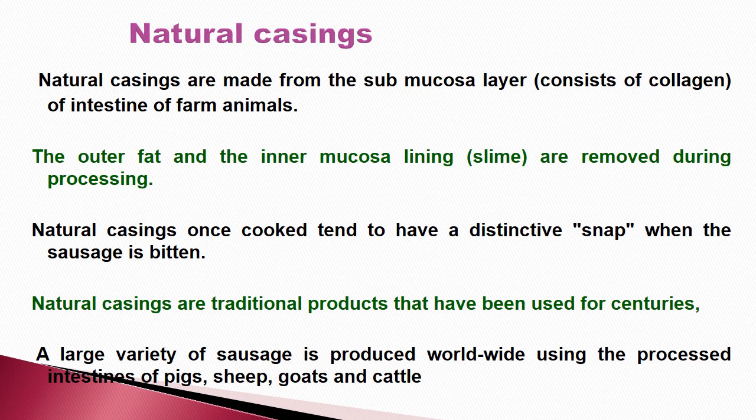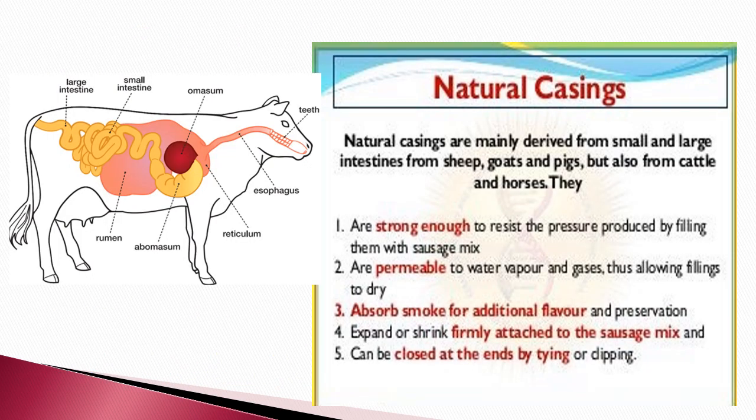Natural casings are traditional products used for centuries. A large variety of sausages are produced worldwide using processed intestines of pigs, sheep, goats, and cattle. In the case of cattle, different parts of the GI tract can be processed into casings — starting from the esophagus, then the true stomach or abomasum, then small intestine, large intestine, and rectum.